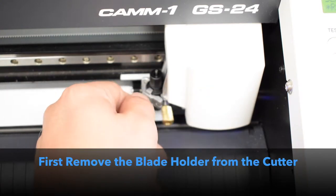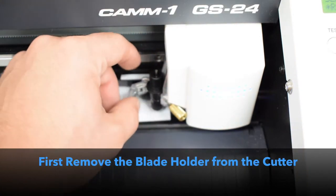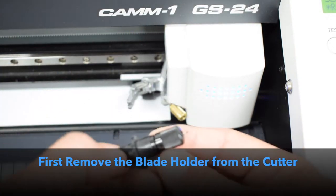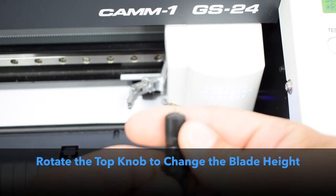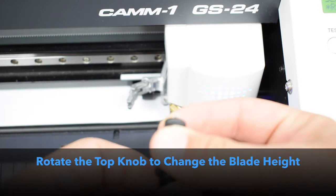What you want to do is remove the blade holder from the cutter. From here you can actually change the height of the blade by spinning the top wheel clockwise or counterclockwise.